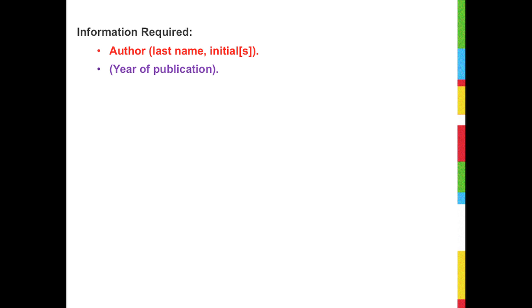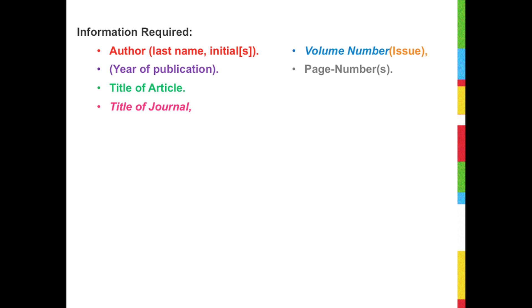To cite a scholarly journal article, you will need the author's name, the year that the article was published, the title of the article, the title of the journal, the volume and issue number, page range of the article, and DOI if given.